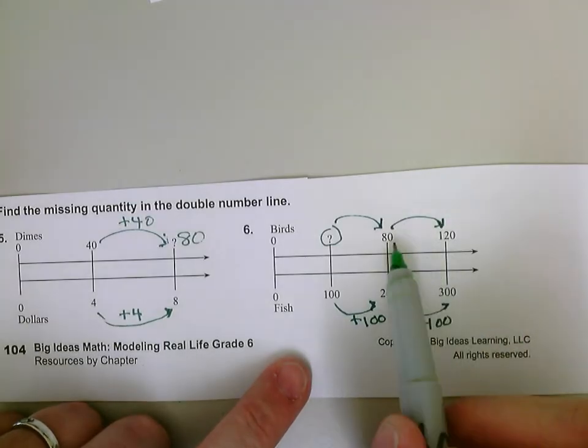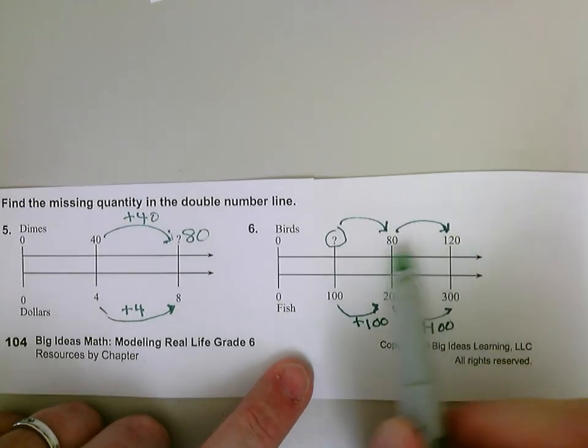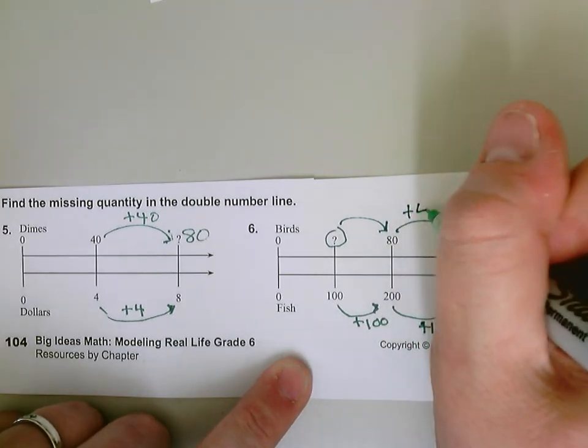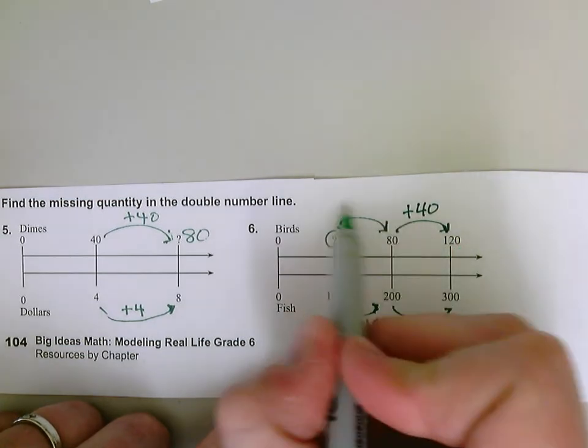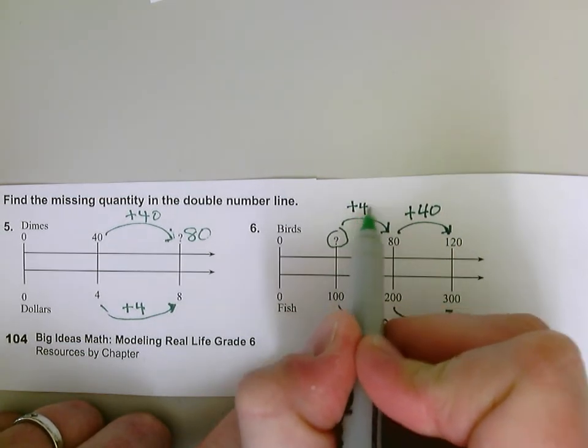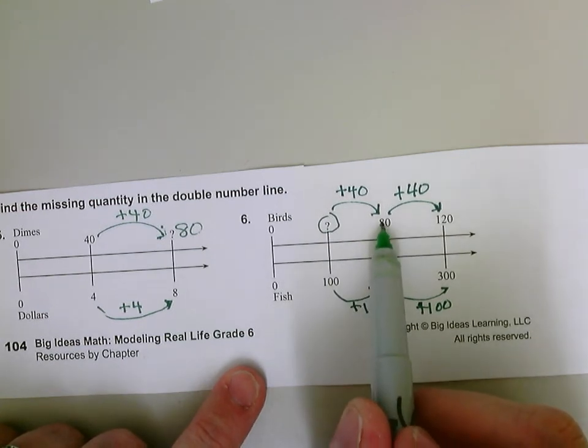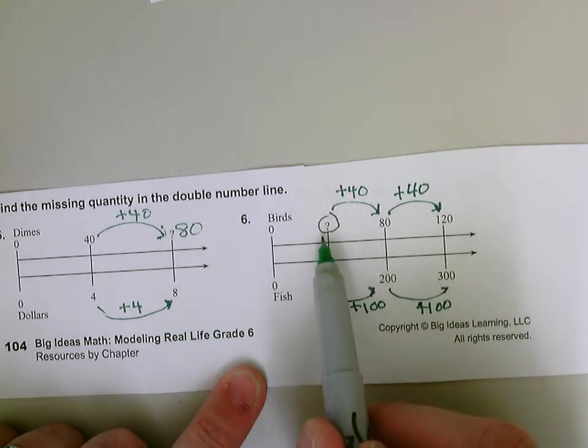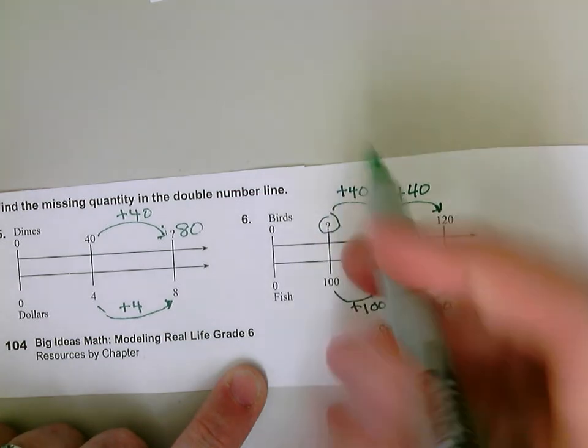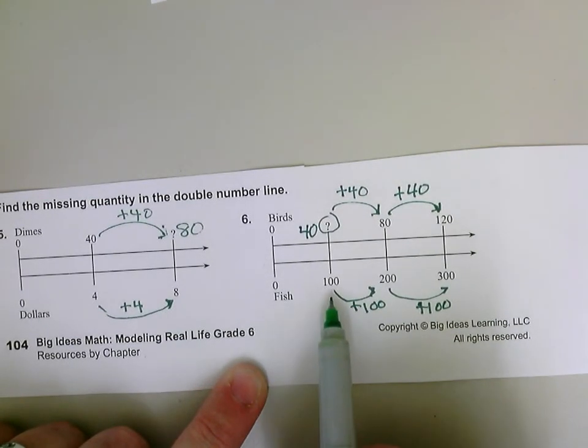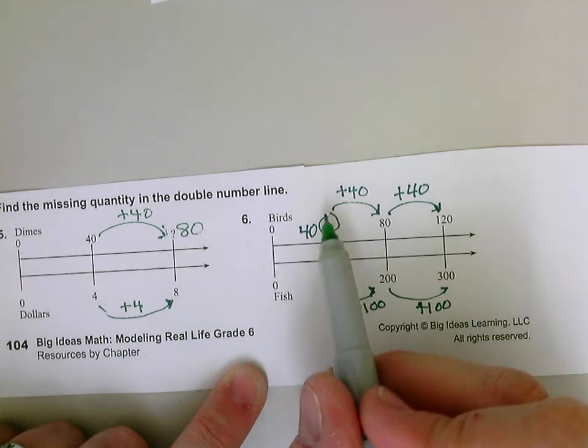So to get from 80 to 120, I could subtract and see what the difference is. That's 40. So I had to add 40 to 80 to get this way. So that means I also had to add 40 over here. So what number plus 40 equals 80? Or I can subtract because I'm moving backwards. 80 take away 40. That gives me 40. So 40 birds would give me 100 fish. And my ratio is staying the same.